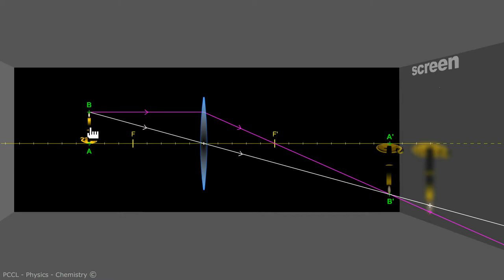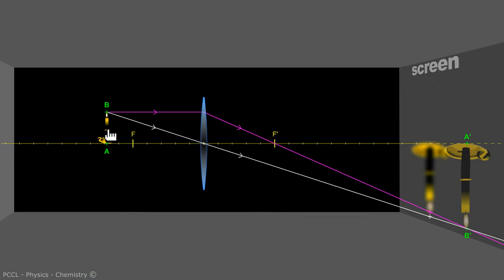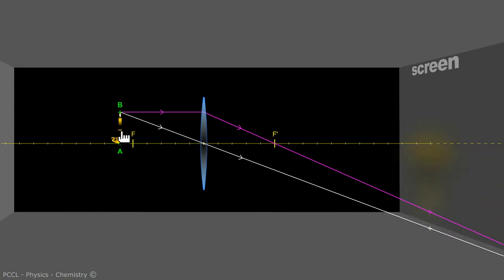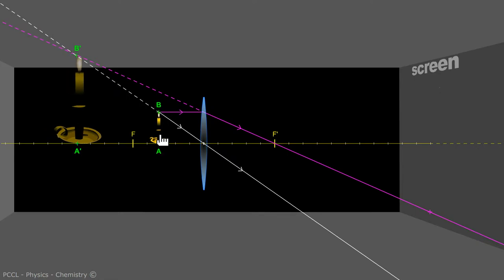If the image is formed in front or behind the screen, we cannot see it. If the image is on the same side as the object, we can see it, but the eye will be placed on the right here. The image is virtual. This is the case with the magnifying glass I was talking about, for example.